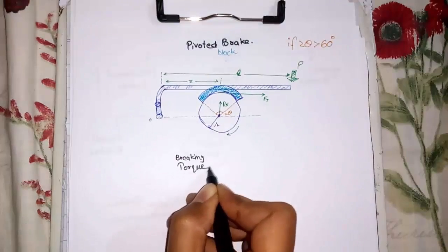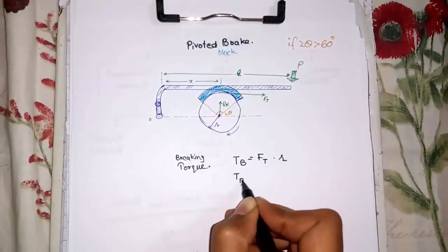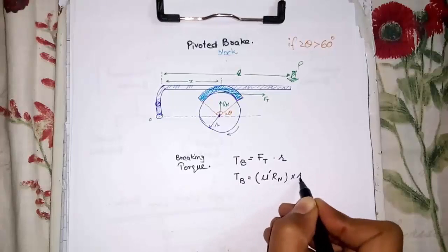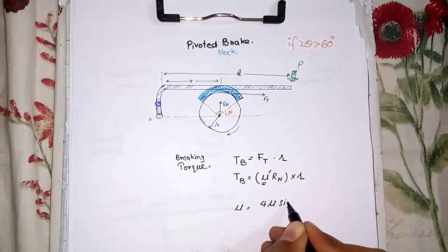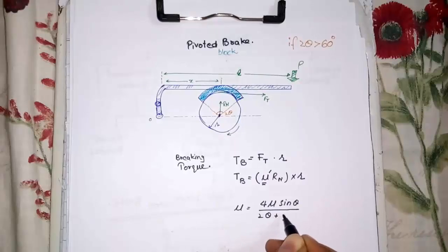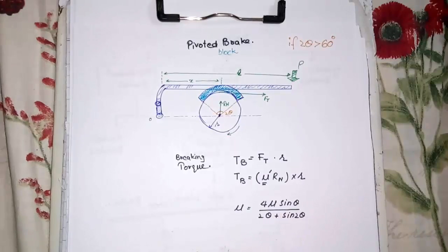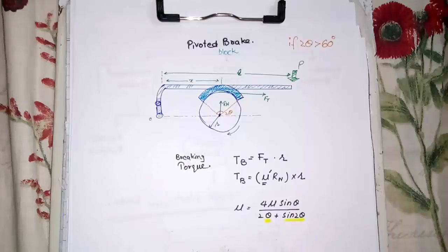For such brakes, the braking torque TB is equal to FT into R, but FT is equal to mu prime times Rn. And mu prime is equal to 4 mu sin(theta) over (2 theta plus sin 2 theta). Note that the angle with a trigonometric function is in degrees, and without the trigonometric function is in radians.